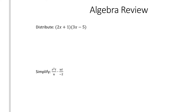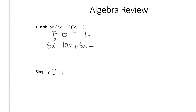Hopefully you remember the acronym FOIL from grade 10 or grade 11 pre-calculus. It stands for first, outside, inside, and last. So we multiply the first two terms, 2x and 3x, which gives us 6x squared. Then we do the outside, which is 2x and 5, giving us negative 10x. Next we do the inside terms, the 1 and the 3x, giving us plus 3x. And finally the last, which is the 1 and the negative 5, giving us negative 5. The middle two terms simplify, so we clean that up as 6x squared minus 7x minus 5.